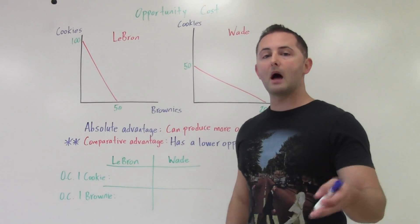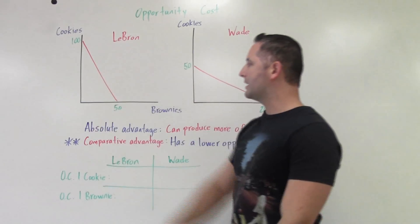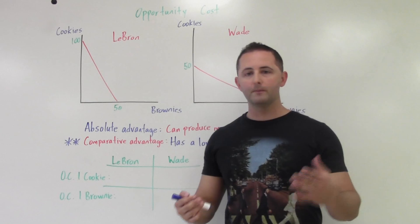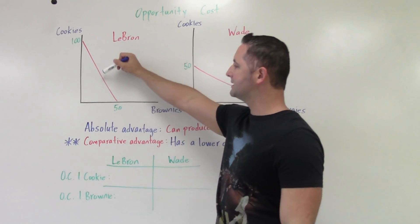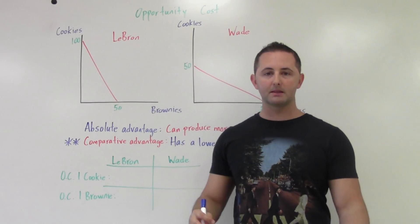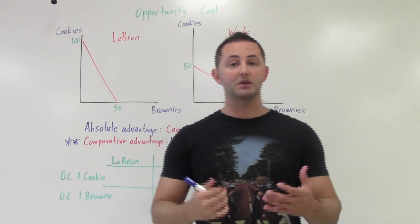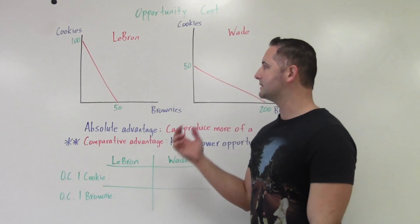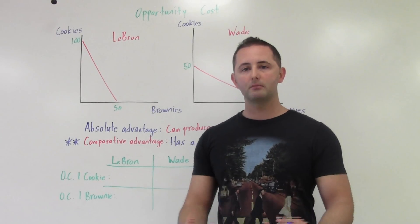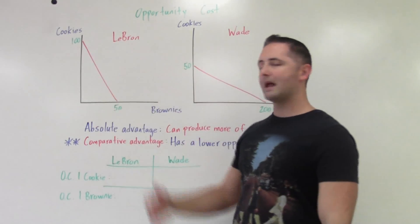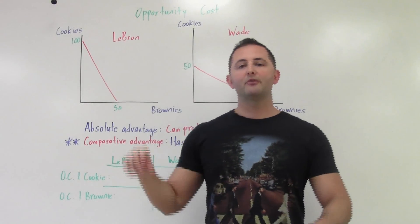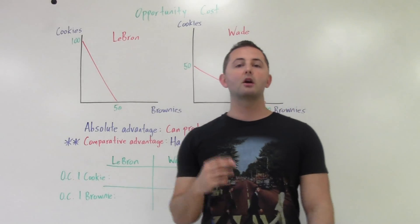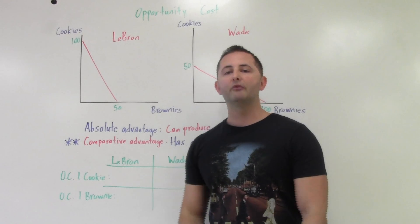These are linear, so we have constant opportunity costs — it doesn't matter what point we're looking at, the opportunity cost remains the same. What we're trying to figure out is what will be the most productive thing to do. Should they each make some cookies and some brownies, or should they specialize? Specialization means that when you do something a lot you get better at it. So rather than have both making both cookies and brownies, it would probably be better if LeBron makes one thing, Wade makes the other, and they trade. There are gains from trade — both people can be better off.